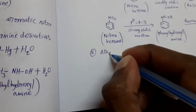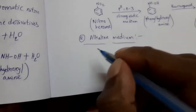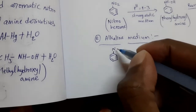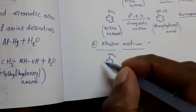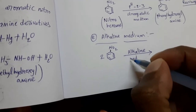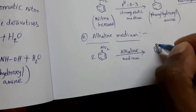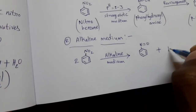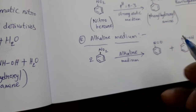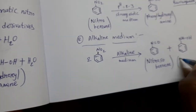In electrolytic reduction in alkaline medium, nitrobenzene undergoes electrolytic reduction and forms different products. In alkaline medium, we can get nitrosobenzene and also phenylhydroxylamine. This is nitrosobenzene and this is phenylhydroxylamine.